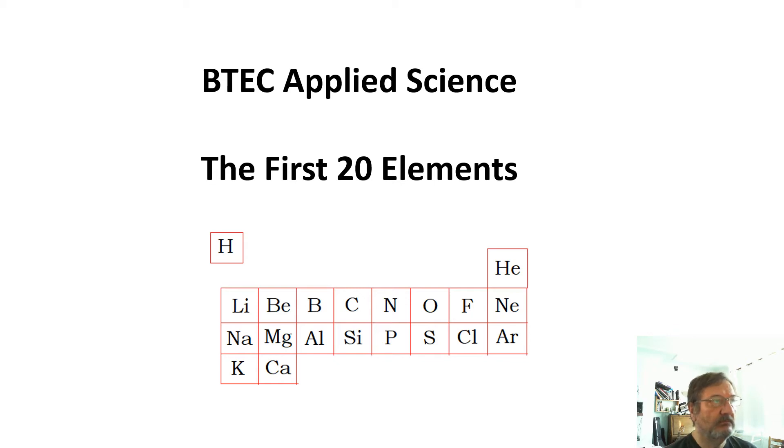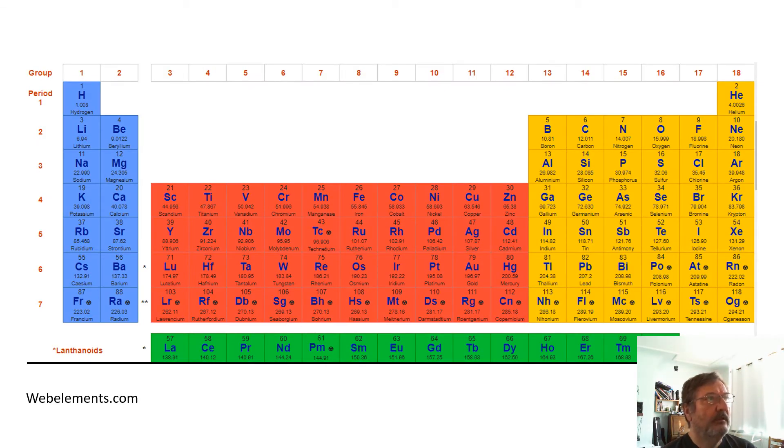If you look at a periodic table like on webelements.com, which is a fantastic interactive periodic table, it looks incredibly complicated. There's so many elements, so much information. If you look at that for the first time and don't understand what's going on, it's very, very daunting.